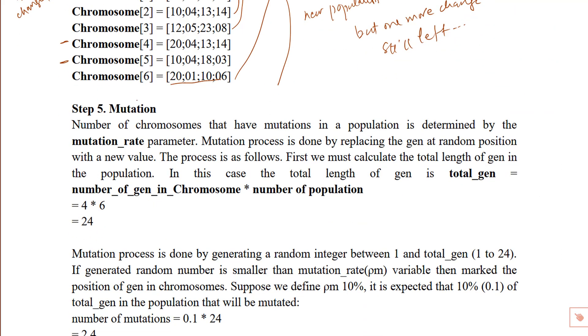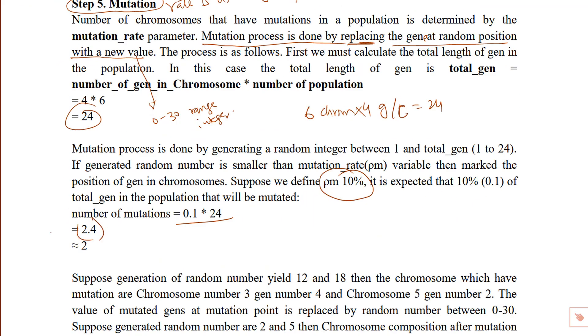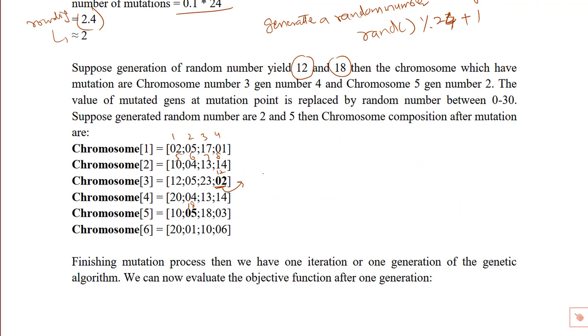Now we are almost done but one step is still left which is mutation. Mutation is a random change in some genes of the whole population and the amount of mutation is controlled by mutation rate which is usually very low. So if mutation rate is 10%, we have a total of 24 genes. Then only two genes will mutate. Again, we can use the modulus operator and do some tricks. Okay, now assume that gene number 12 and gene number 18 are selected. Then genes at location 12 and 18 are reassigned random numbers. And according to our initial constraint, the numbers are in the range of 0 to 30.